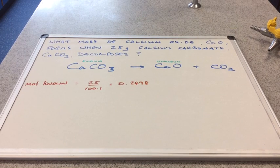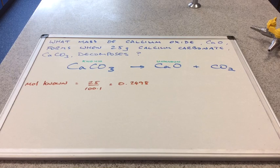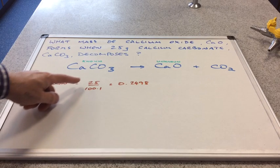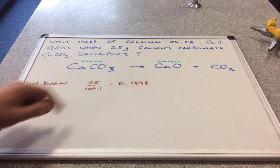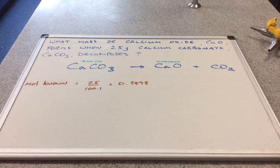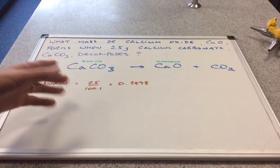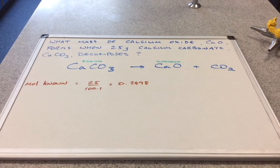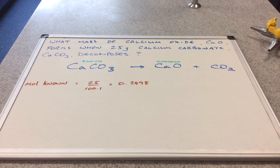Once we've established our known and unknown substances, the next thing we do is work out how many moles of the known substance we've got. We can do that because we know the mass of the known substance and we always know the MR from the formula. That comes out at 0.2498 moles of calcium carbonate.